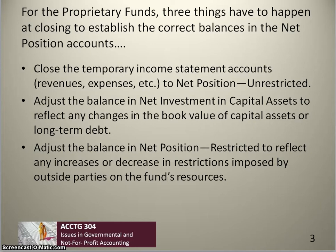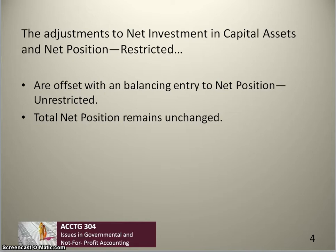When we make adjustments to net investment in capital assets and restricted net position, these adjustments are always offset with a balancing entry to net position unrestricted. So if we increase net investment in capital assets, we decrease net position unrestricted. Total net position always remains unchanged following these adjustments.